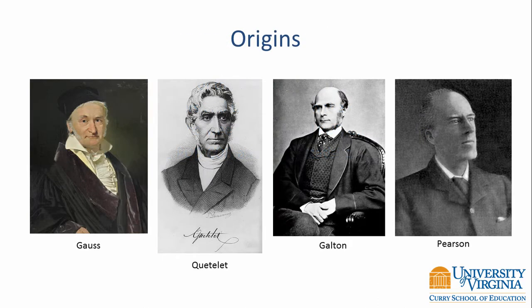Carl Gauss is often credited with the invention of the normal distribution, but others such as Laplace also contributed to its development. In the 1830s, Belgian astronomer Quetelet brought the normal distribution to the social sciences where it was popularized by Francis Galton.